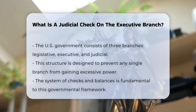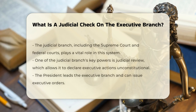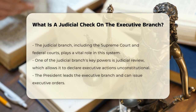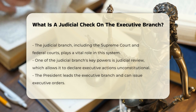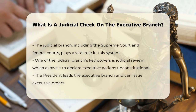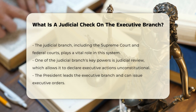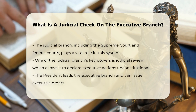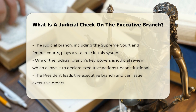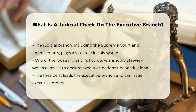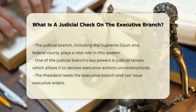One of the key powers of the judicial branch is the ability to declare acts of the executive branch unconstitutional. This power is known as judicial review. When the executive branch, led by the president, takes an action or issues an executive order, the judicial branch can review this action to determine if it aligns with the Constitution. If the judicial branch finds the action to be unconstitutional, it can declare it null and void, effectively removing it from the law.